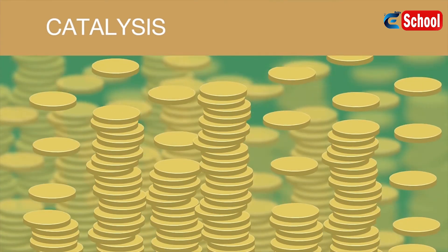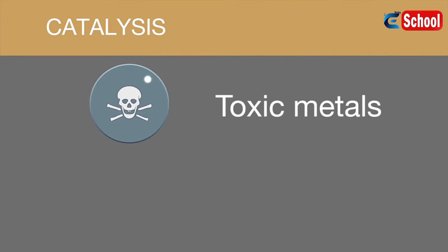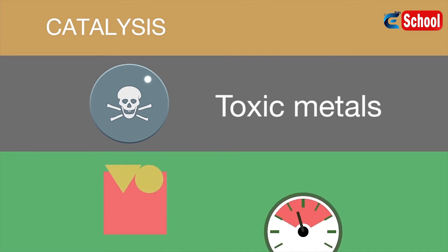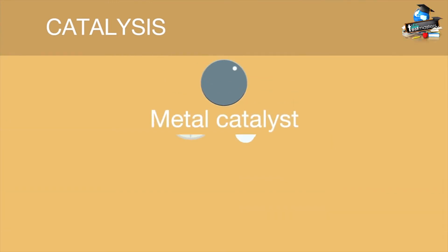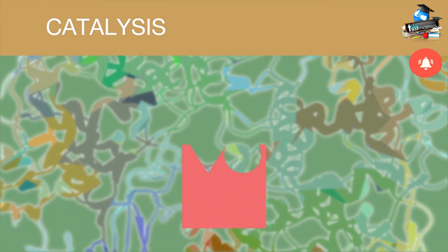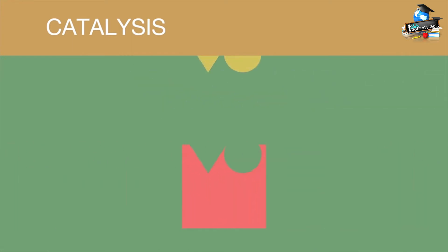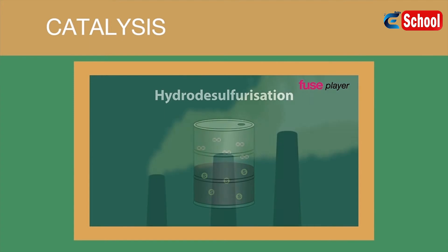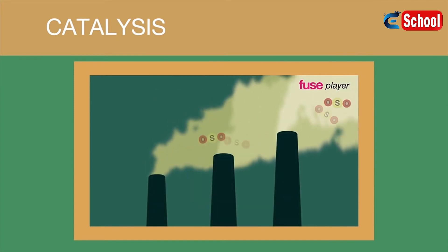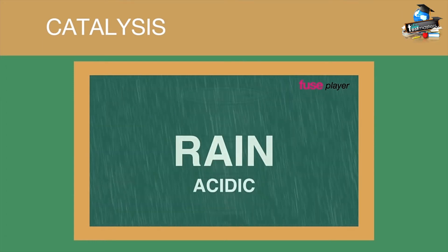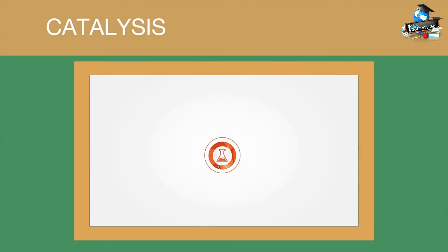Metal catalysts are often used in drug design to ensure that a chemical adopts a particular chirality. Enzymes, or biological catalysts, provide countless examples of being able to fill the same role as a metal catalyst. The key advantage of enzymes is that reactions can be performed under aqueous conditions and at ambient temperatures. In industry, desulfurization of fuels by catalysis is used to reduce atmospheric sulfur. Sulfur which ends up in the atmosphere can contribute to acid rain. Therefore, better catalysts are being developed to remove sulfur from fuels to prevent atmospheric issues later.